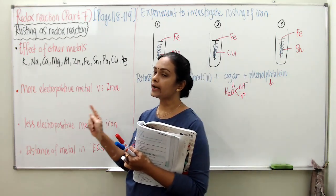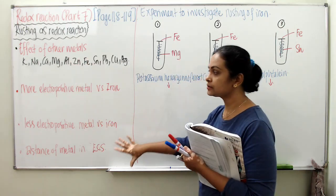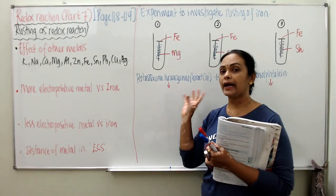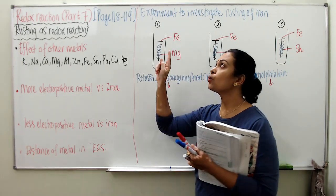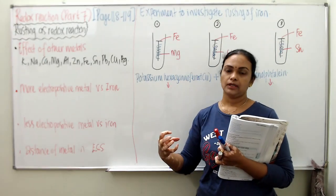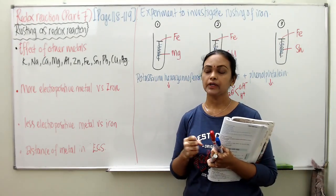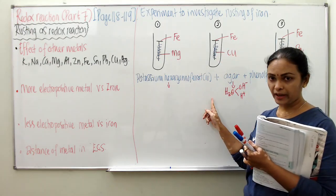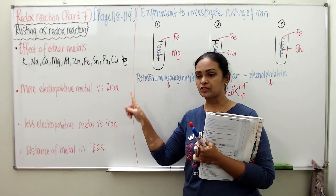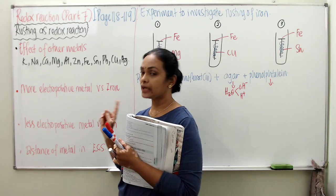Now we are going to look at the same subtopic, but we are going to discuss rusting as a redox reaction and look at an experiment from page 119 — which metal inhibits or promotes the rusting of iron. Before we do this experiment, you have to understand two concepts. A few explanations on concepts of rusting as a redox reaction.